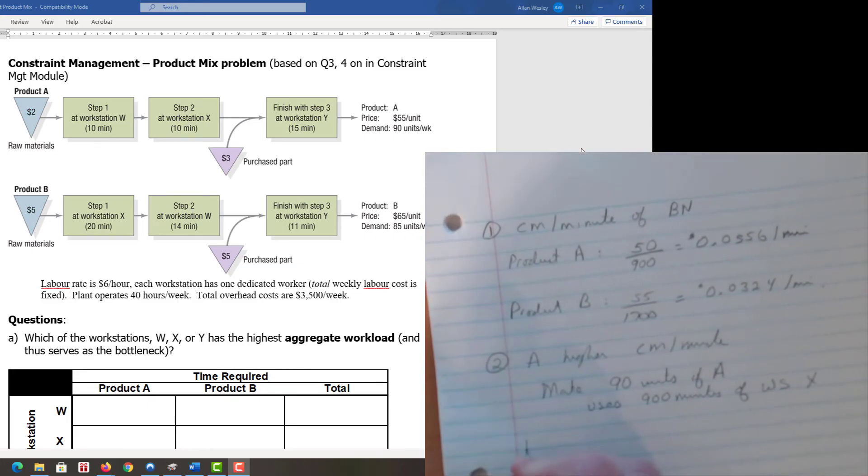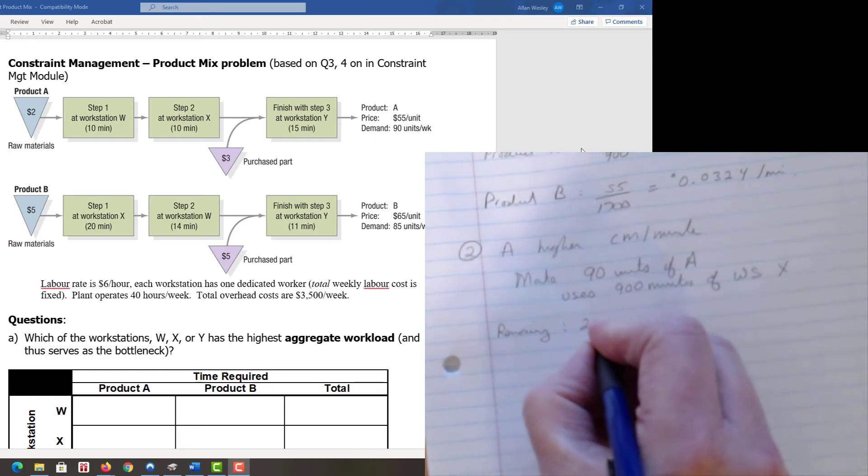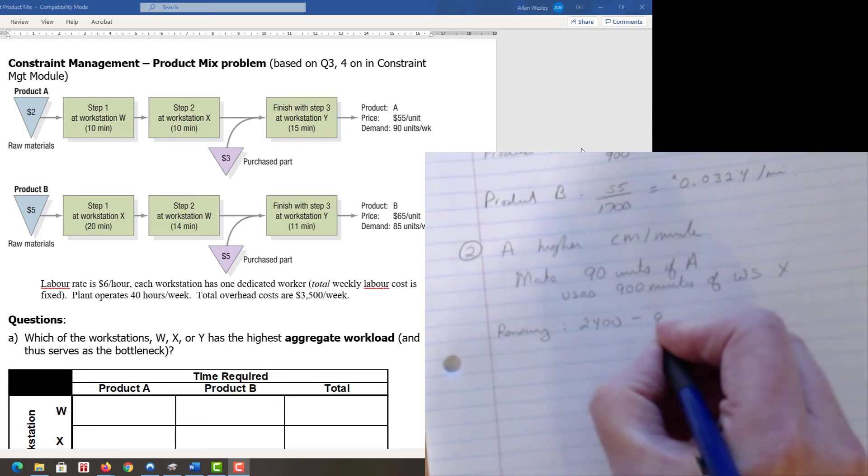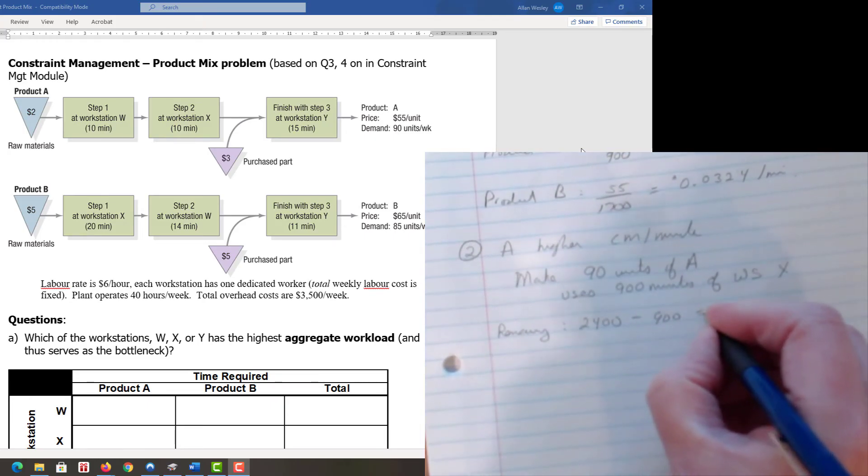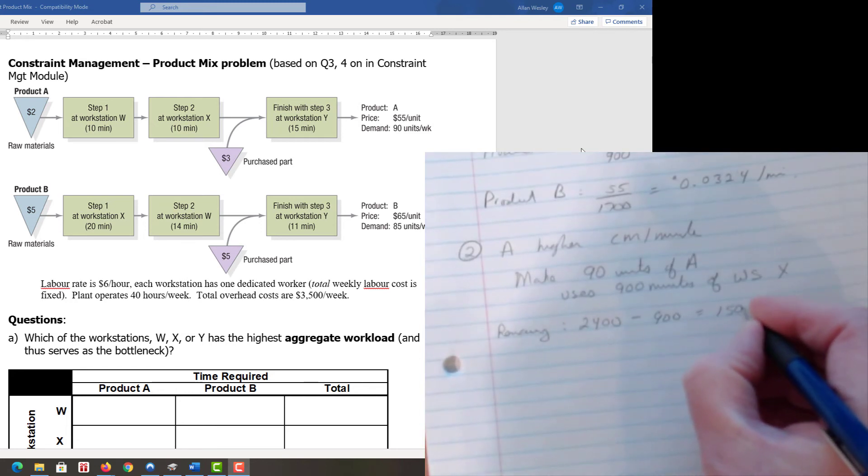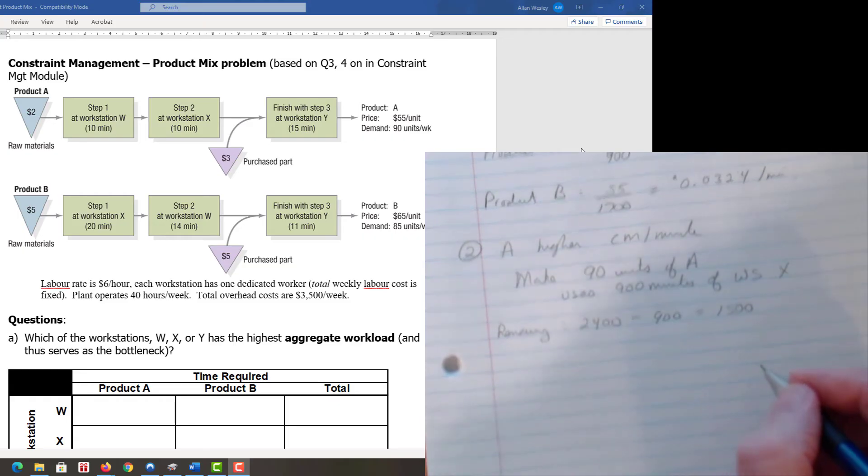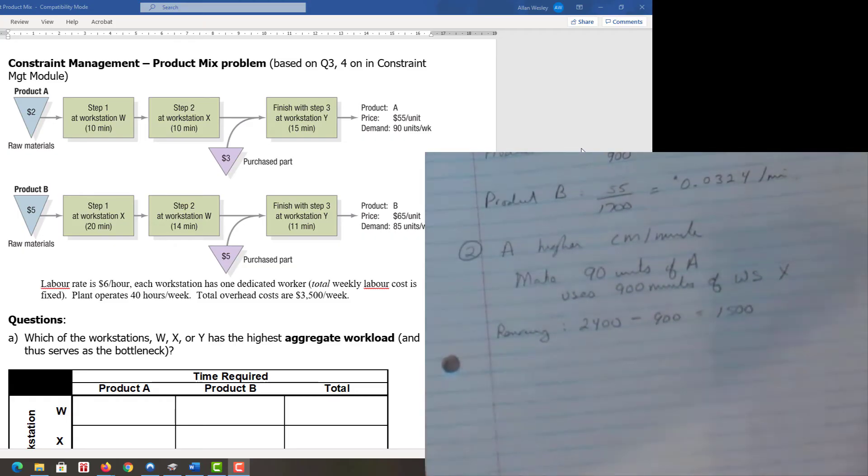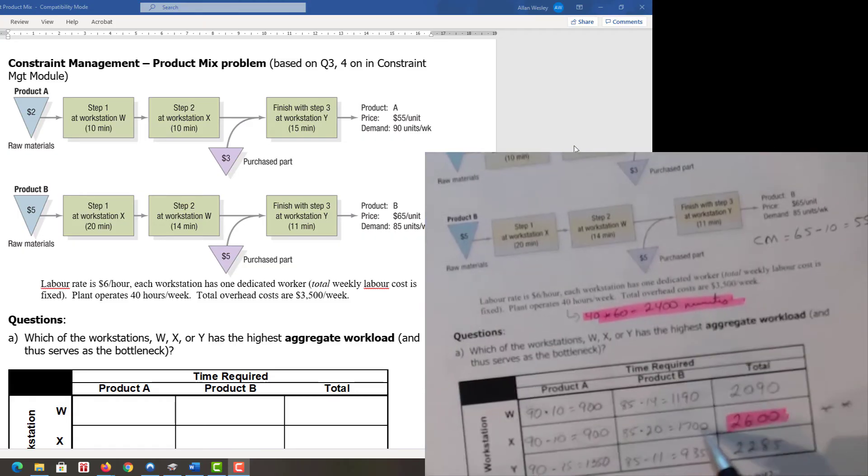We have to figure out how much is remaining—a little bit of an accounting exercise. We started with 2,400 minutes, used 900 minutes to make product A, and now have 1,500 minutes available to make product B. We know that to make all the product B we want, we need 1,700 minutes, so clearly we're not going to make the full 85 units.